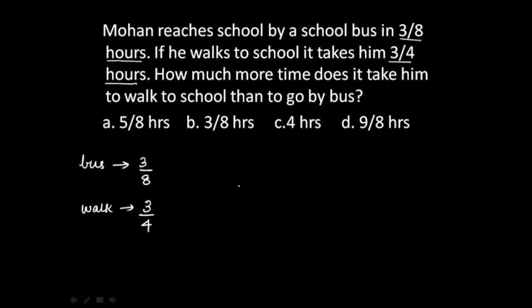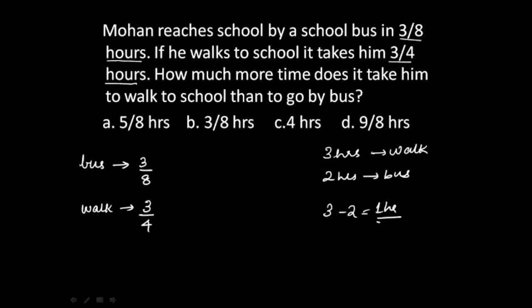For example, if Mohan takes 3 hours to go to school by walk and 2 hours by bus, how much more time does he take to walk? That's 3 minus 2, which is 1 hour extra. Similarly here, if he goes by bus it's 3/8 hours, and by walking it's 3/4 hours. So we calculate 3/4 minus 3/8. The denominators are different, so we cannot subtract directly.